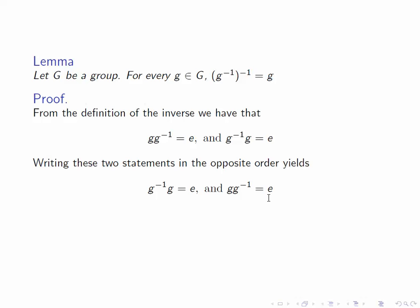Let's write these in the opposite order, these two statements in the opposite order. We get G inverse G is equal to E, and G times G inverse is equal to E. Well, that's exactly the statement that G is the inverse of G inverse. In other words, in our new notation, G is equal to the inverse of G inverse.